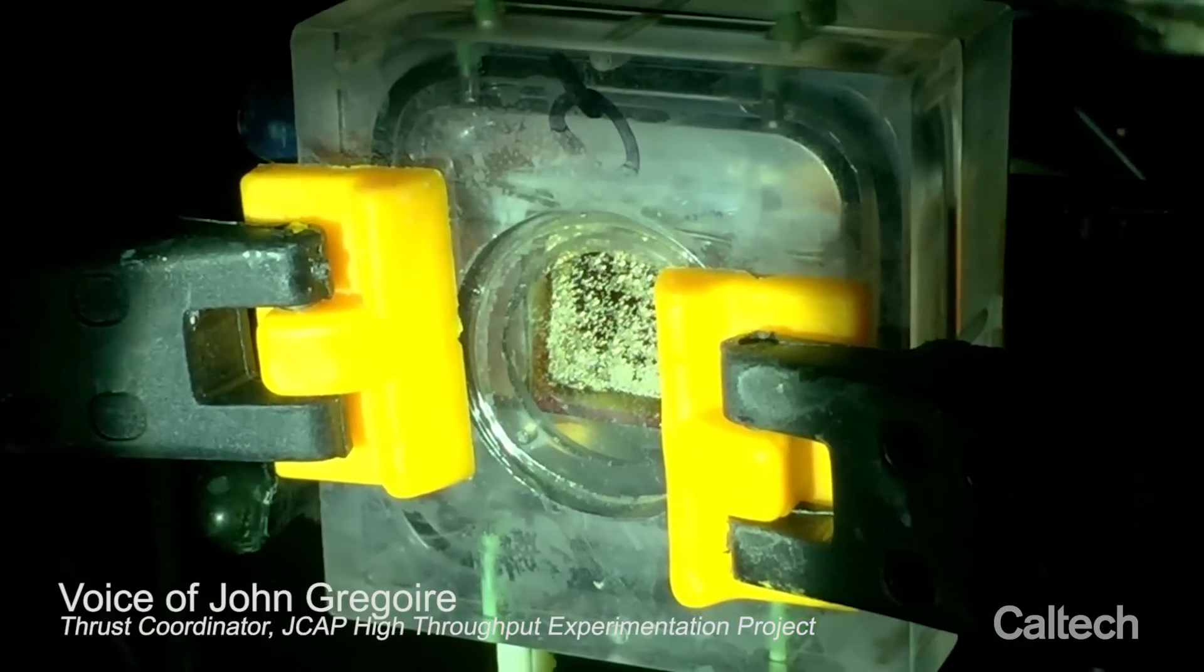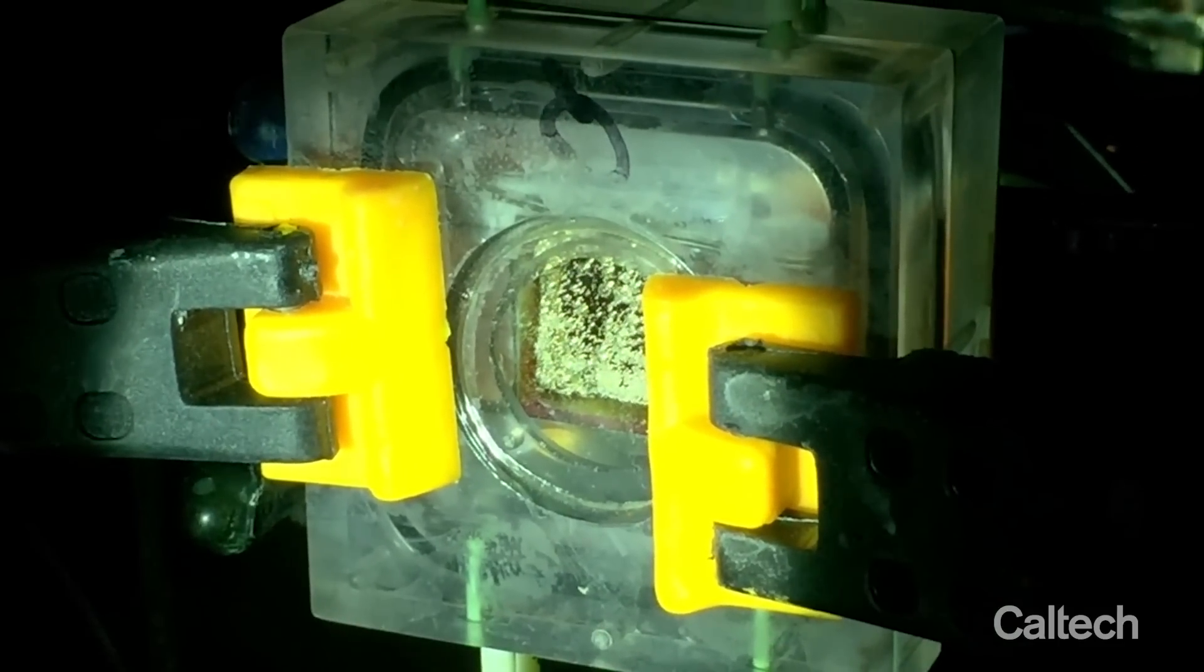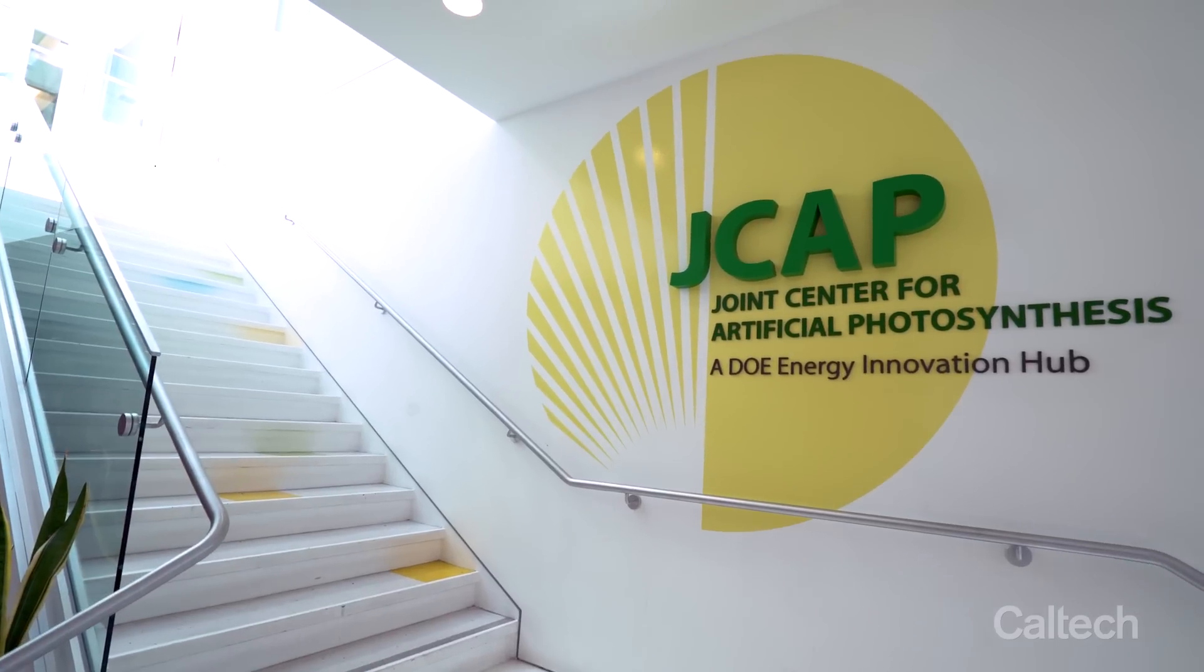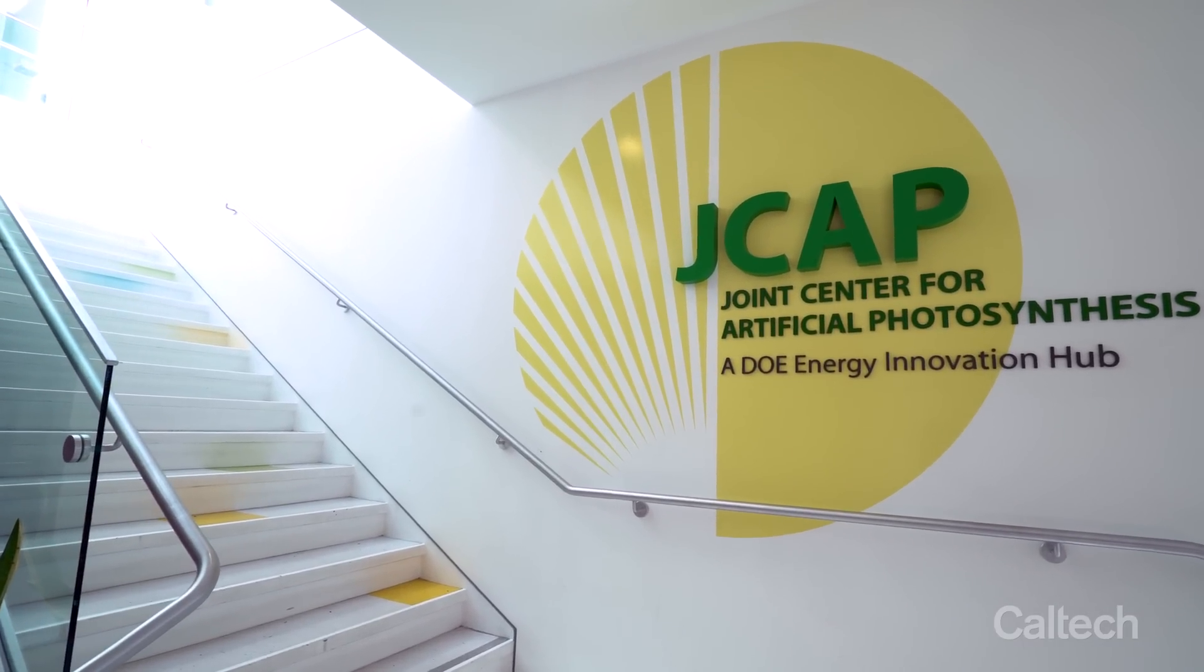This solar fuels prototype is splitting water to generate hydrogen fuel, and JCAP is building technologies to create a broad range of renewable fuels for powering our society.